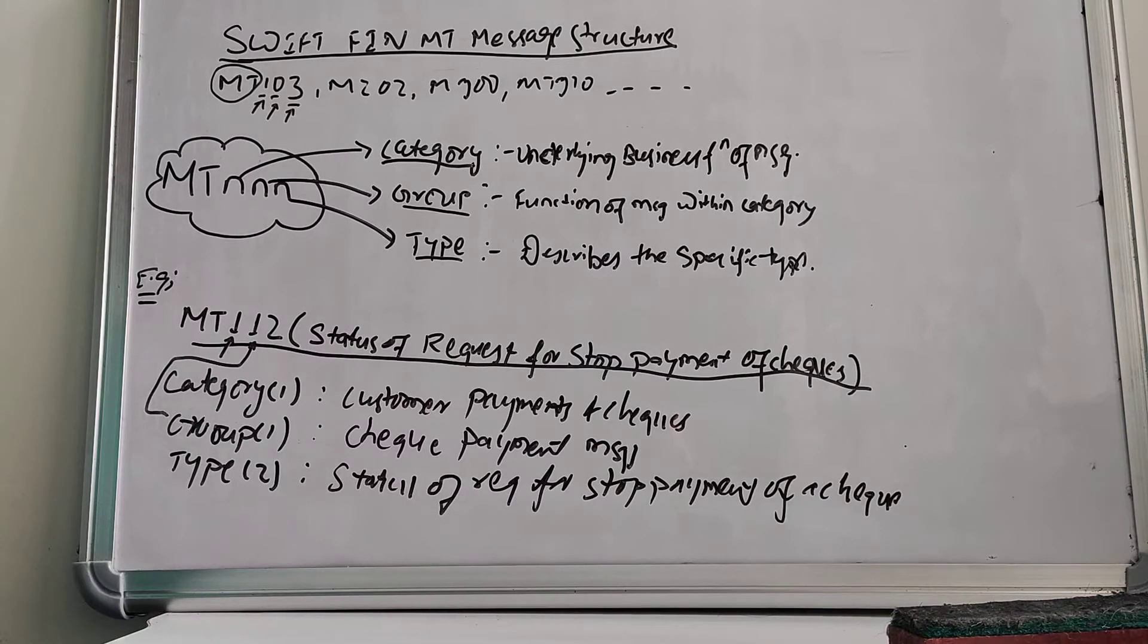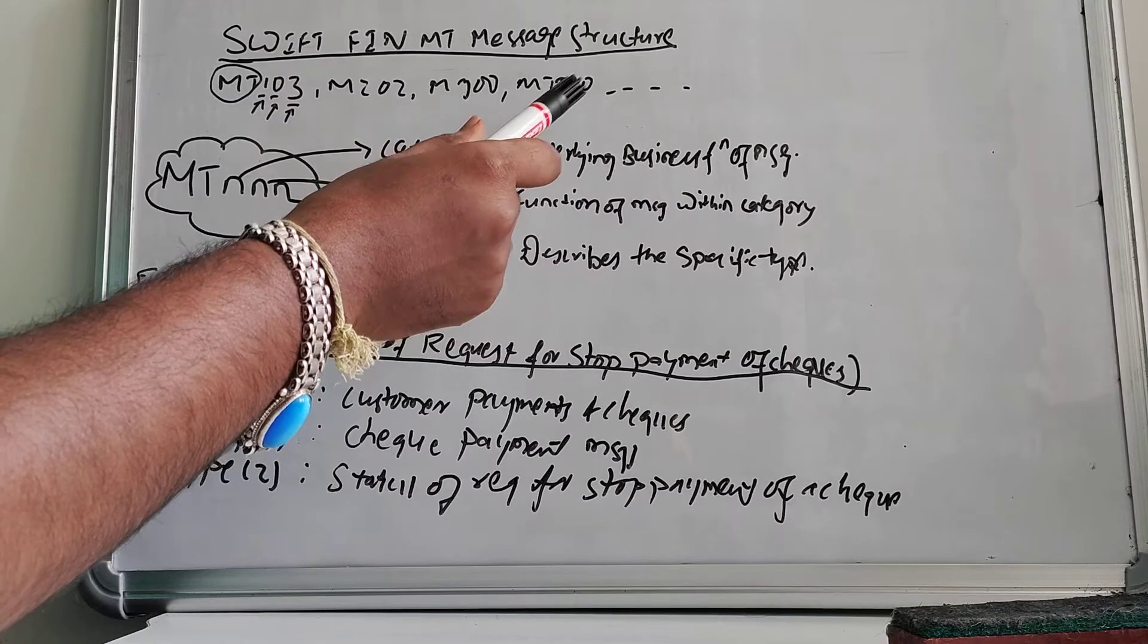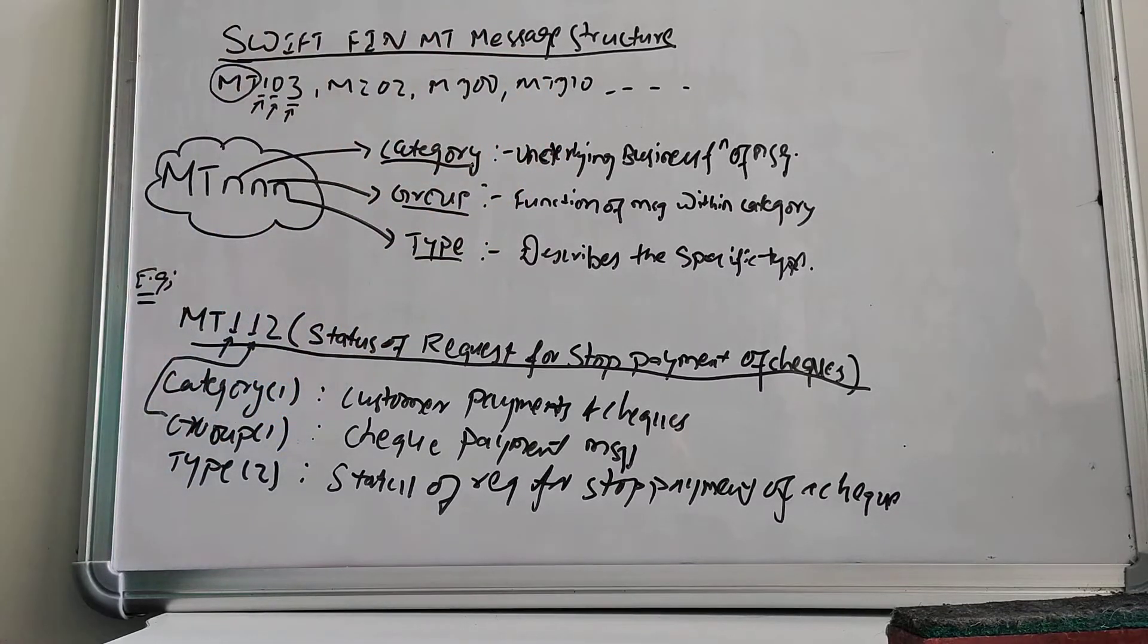Hello and welcome. Today we will understand the SWIFT FIN MT message structure. We have come across different SWIFT messages: MT103, MT202, MT900, MT910, and so on. We have also gone through the different SWIFT MT series, starting from MT0 to MT9 series.